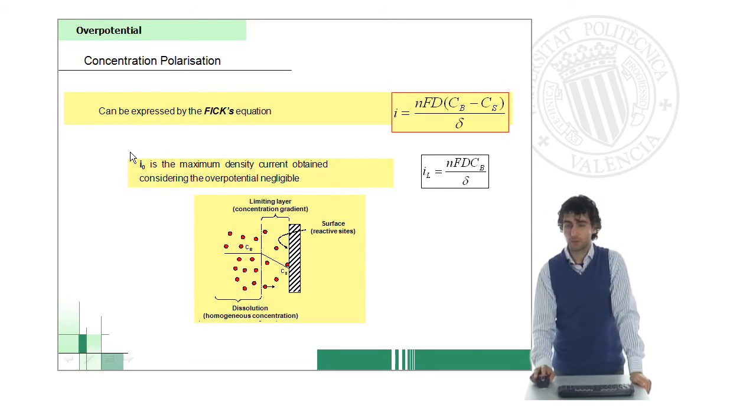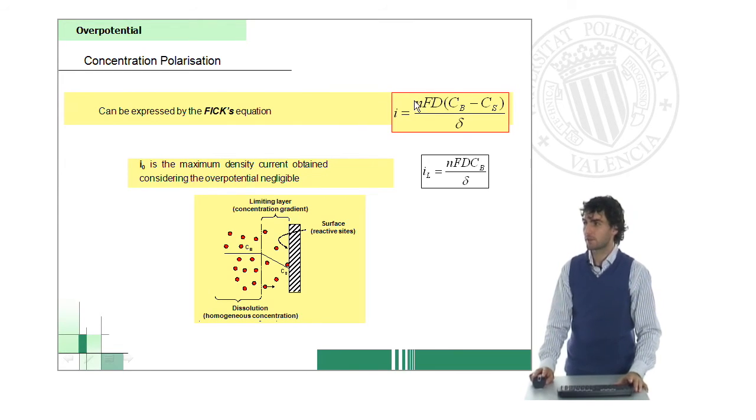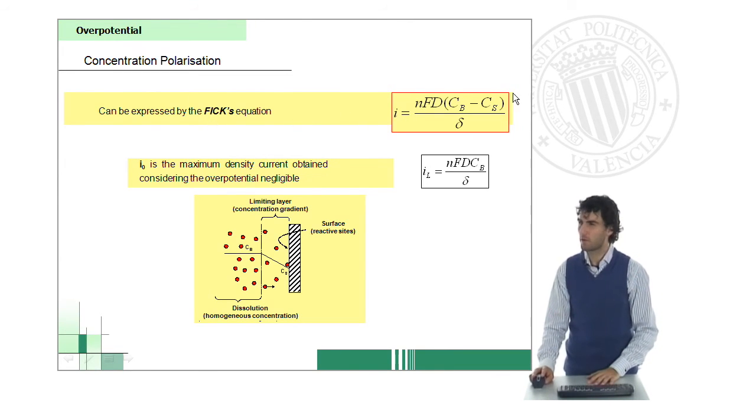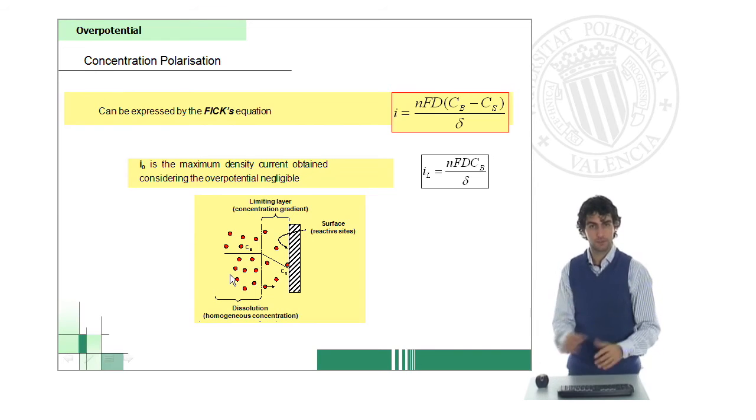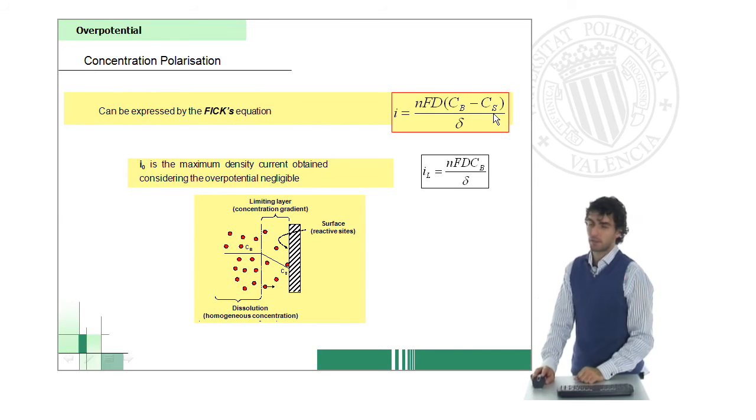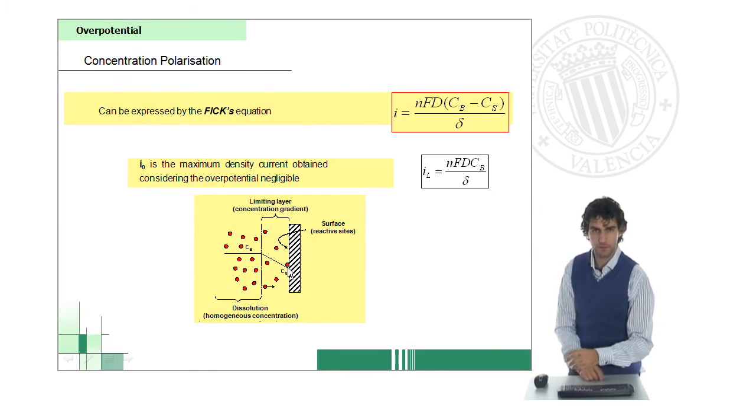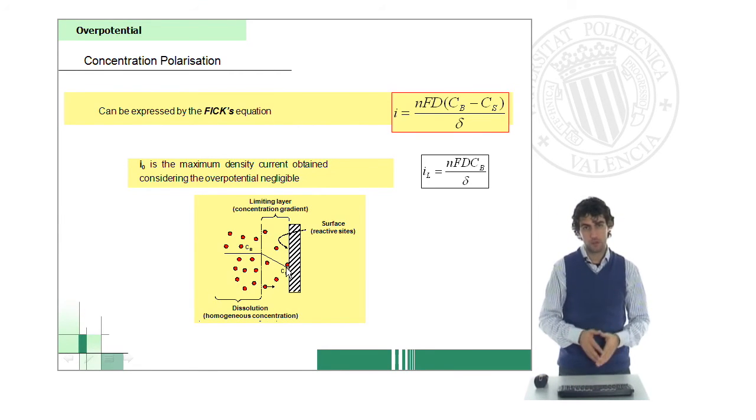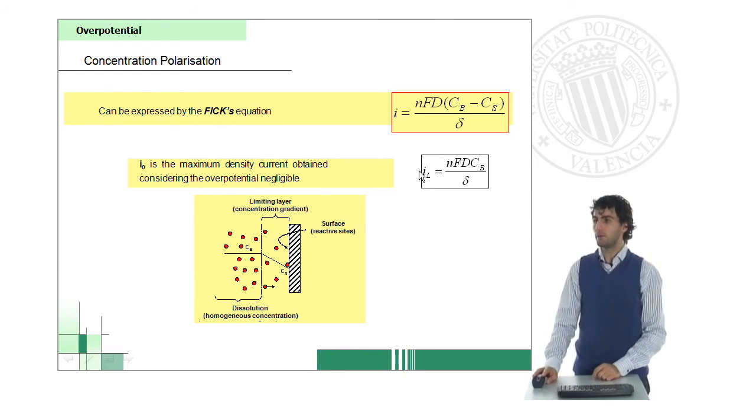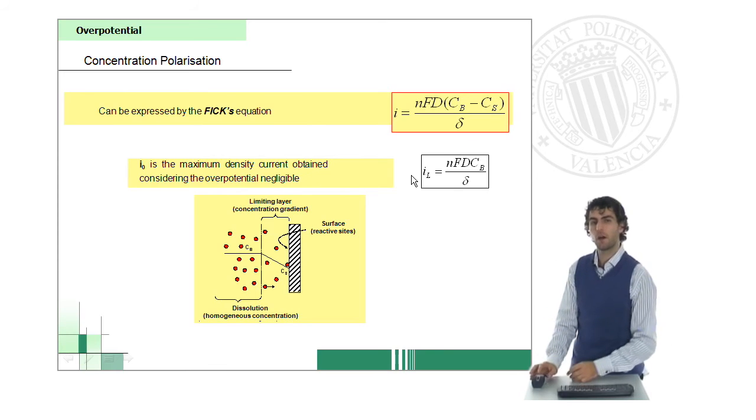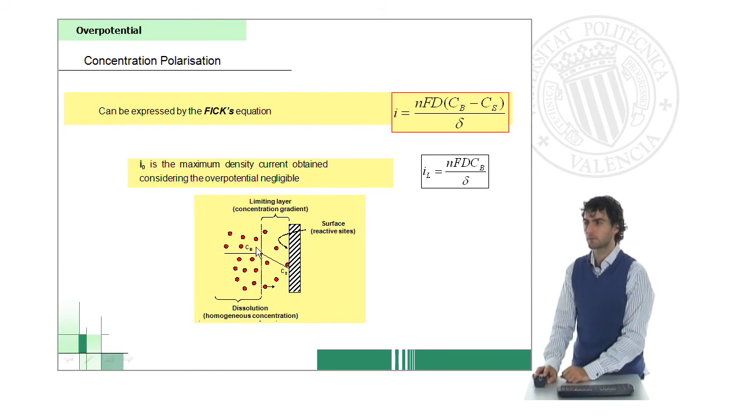So, the concentration polarization can also be represented by an equation, and then we need to take into account the Fick's equation. And we see how there is a difference between the concentration of the bulk solution, which would be mainly the concentration of the stream you are supplying to your system, and then the concentration at the surface. We can also calculate this parameter, which is the limiting intensity, which gives you an idea of how good is your system in terms of mass transfer.